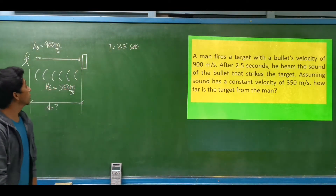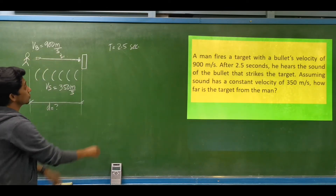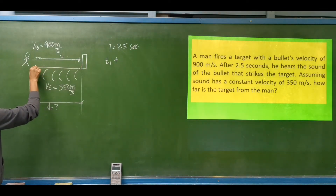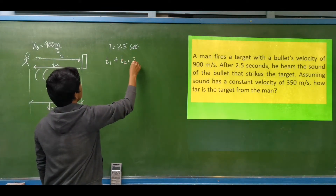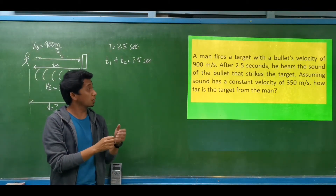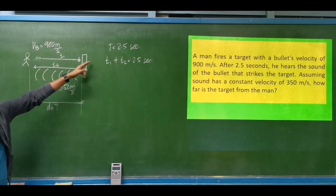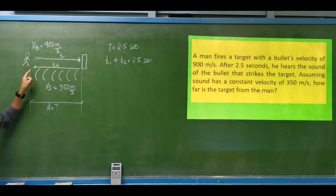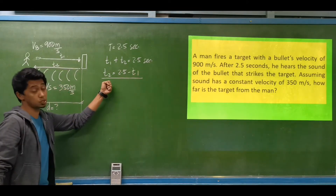Take note that we have two time intervals. Time 1 is for the bullet to travel from the man to the target. Time 2 is for the sound to travel from the target back to the man. Time 1 plus Time 2 equals 2.5 seconds. We can express Time 2 as 2.5 minus Time 1, and we will use this equation later.